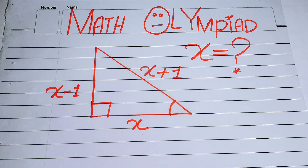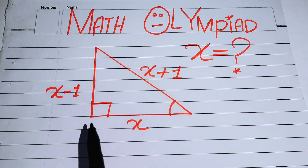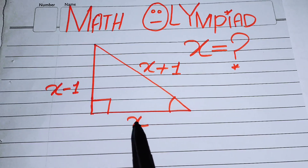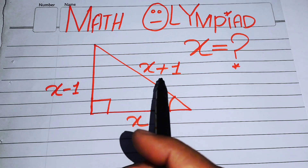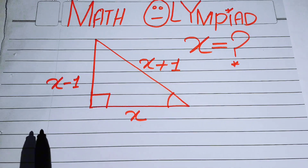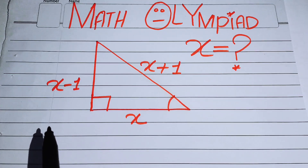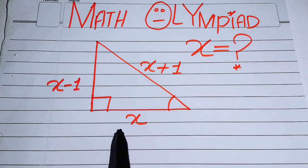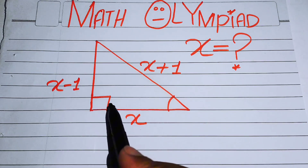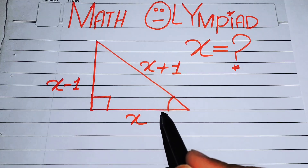Hello everyone, welcome back to the Map of Mathematics. In this video we are going to solve a nice Math Olympiad geometric problem. We have a right triangle in which the lengths of the sides are X, X minus 1, and X plus 1, and we need to solve for the value of X. We assume that one angle is the right angle and another is some other angle.